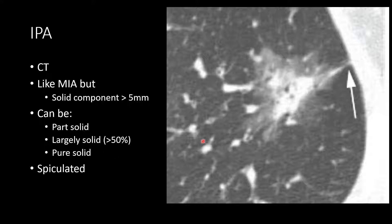Here's another invasive pulmonary adenocarcinoma — a part-solid pulmonary nodule with ground glass in the periphery and a larger central solid component. This lesion demonstrates greater than 50% consolidation versus ground glass, indicating a much higher likelihood of being invasive. Note the angular borders, air bronchograms, intermixed cystic change, and pleural tagging — all features more associated with invasive lesions.